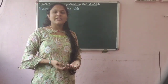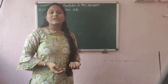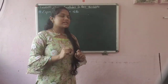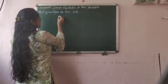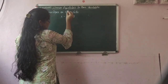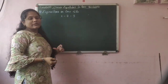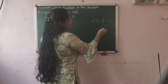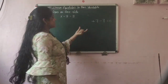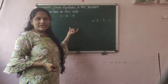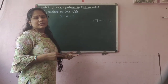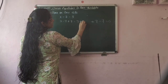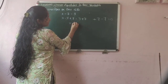Now let us see how to solve linear equations in one variable. There are two types: equations in which variables are only on one side, and equations in which variables are on both sides. For the first type — variables on one side — let us take the example x minus 7 is equal to 3. We shall add 7 on both sides, because in an equation, whatever we add or subtract, we must do on both sides. So x minus 7 plus 7 equals 3 plus 7, giving us x equals 10.